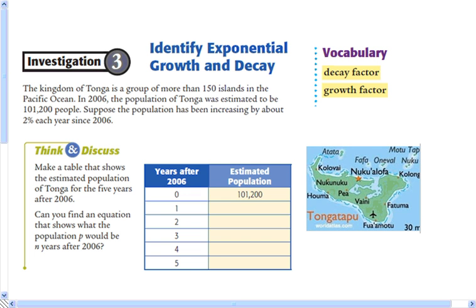This is lesson 4.3: identifying exponential growth and decay. You should be able to look at a graph, an equation, or a table and understand whether it represents exponential growth or exponential decay.